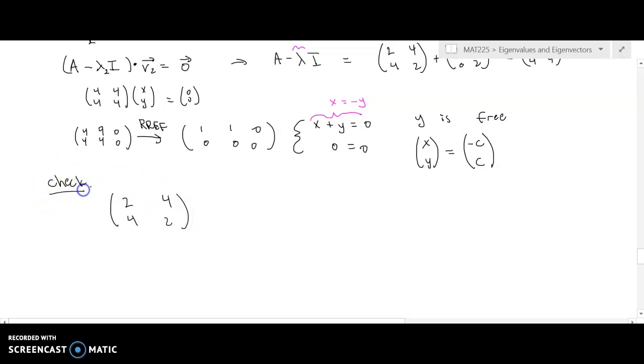Times what we're claiming now is anything of the form where the x and the y components are negatives of each other should equal. Well, let's see. That will give me -2c plus 4c is 2c. And -4c plus 2c is -2c. And so we see that what comes out when I insert a vector of that form is -2 times [-c and positive c].